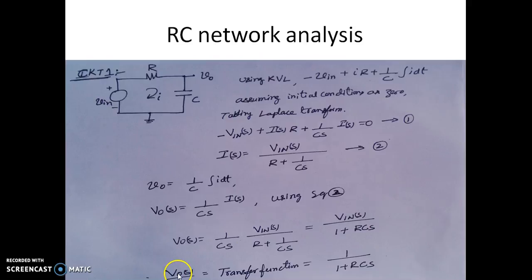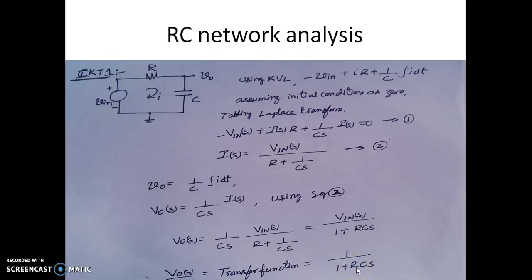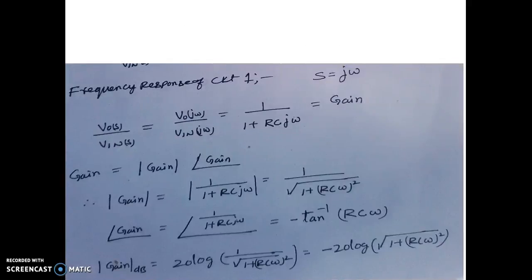We know this is the transfer function, which is the ratio of V_out(S) to VIN(S). The transfer function is 1 over (1 + RCS). This is the Laplace transfer function for this particular network, given by 1/(1 + RCS).